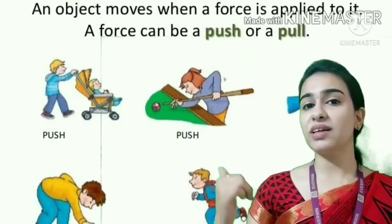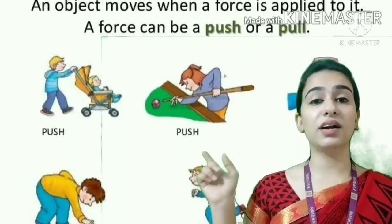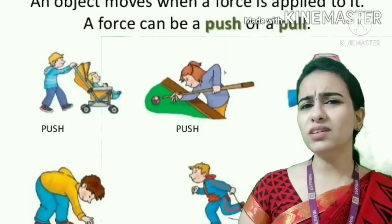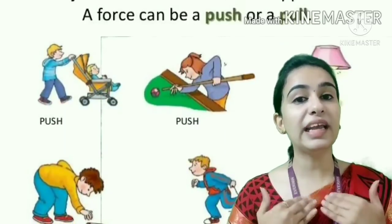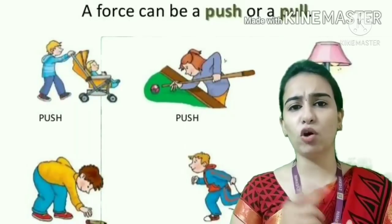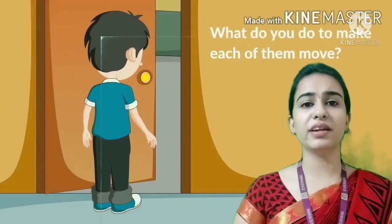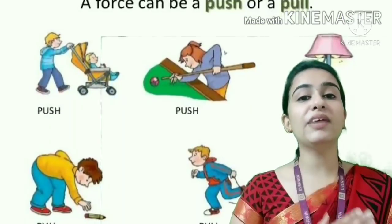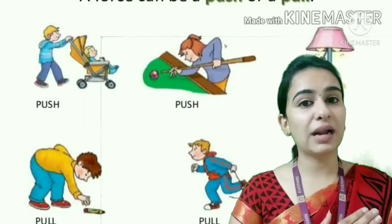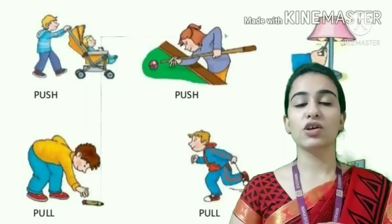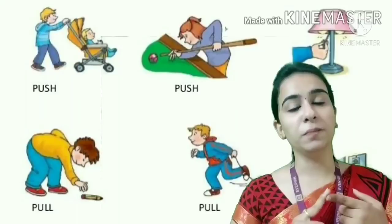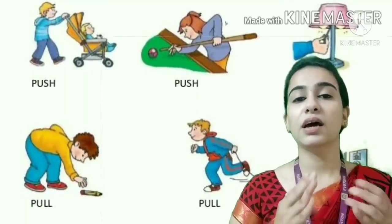Look at these pictures. You can see some people are pulling something and other people are pushing something. This pushing and pulling are called force. An object is set to move only when we apply force - without applying force, the object will not move. For example, if I want to close the door, without applying force, the door will not close automatically. So what is force? A force can be a push or a pull.